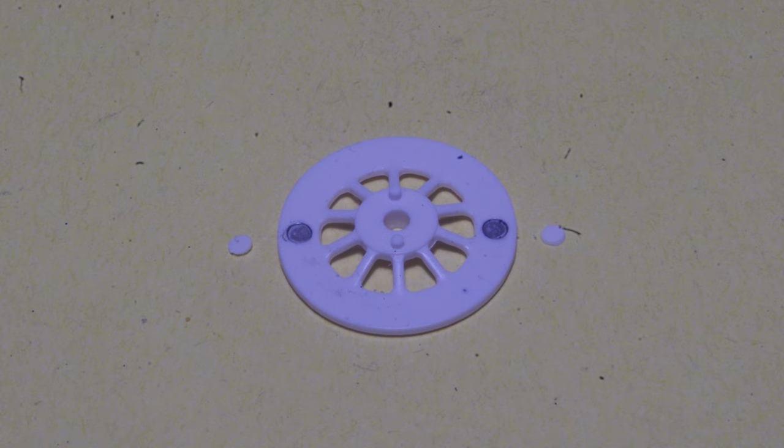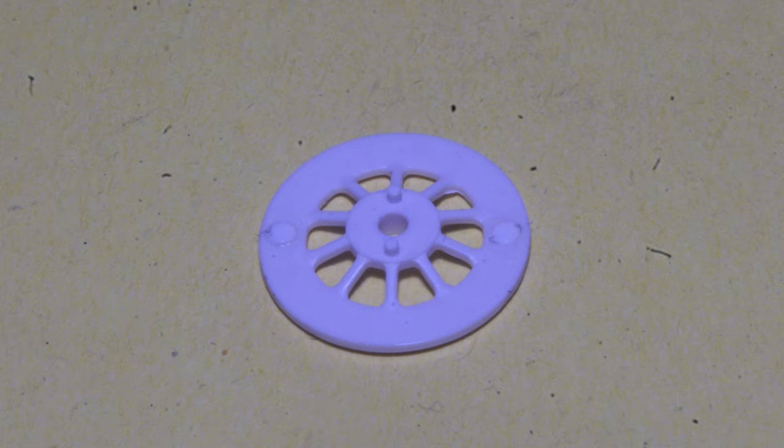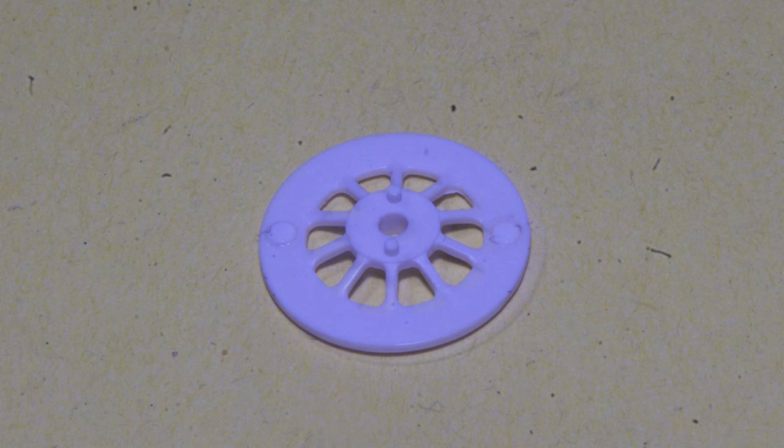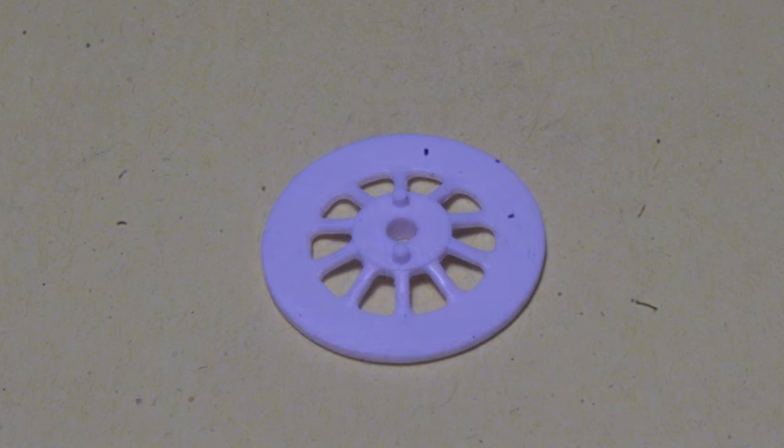By punching discs out of 20 thou styrene sheet, gluing them in place with solvent cement, letting the cement cure thoroughly, and then sanding them down flush with the surface of the brake rotor.